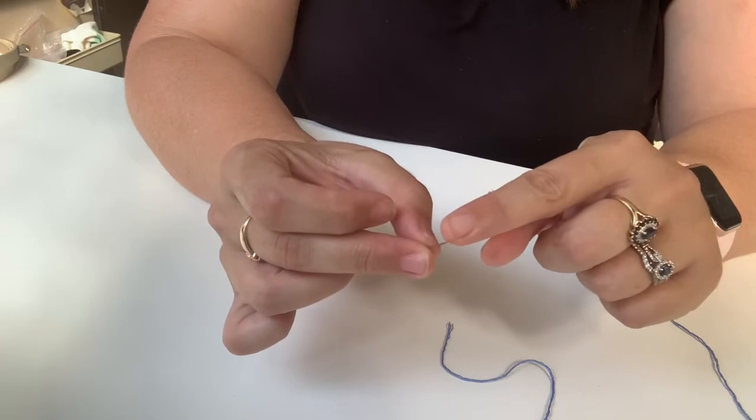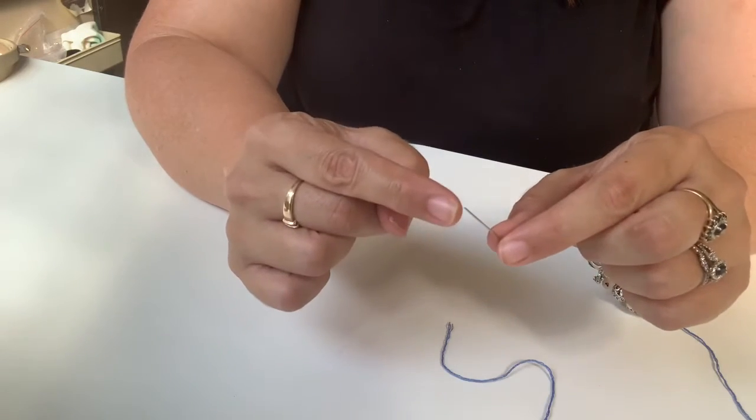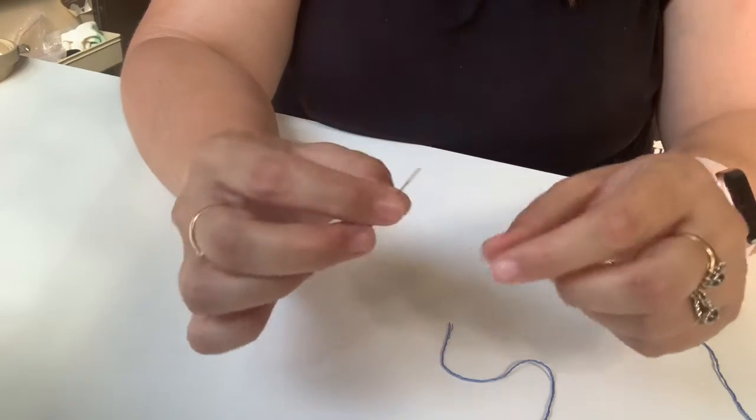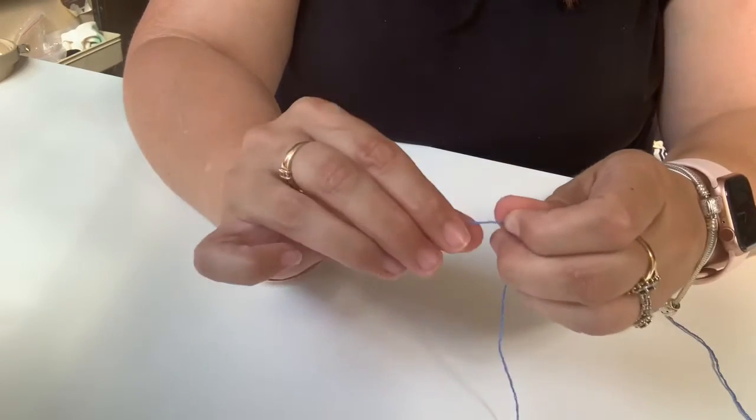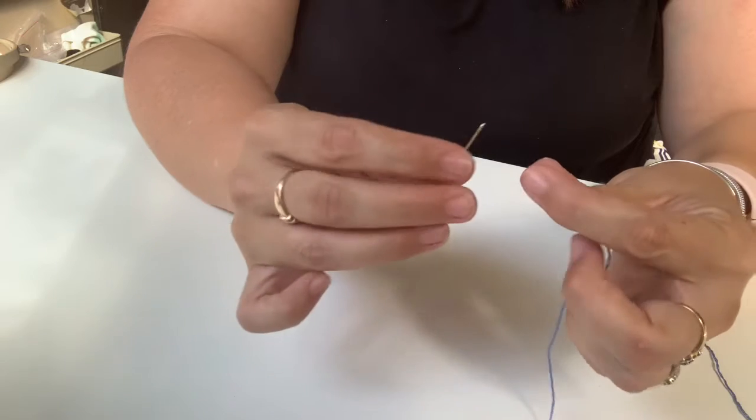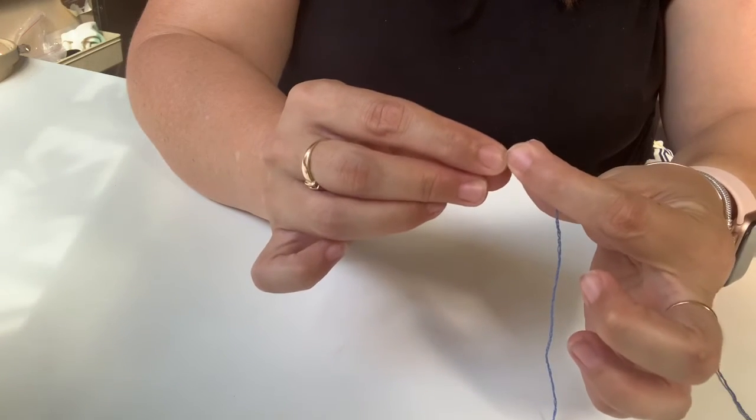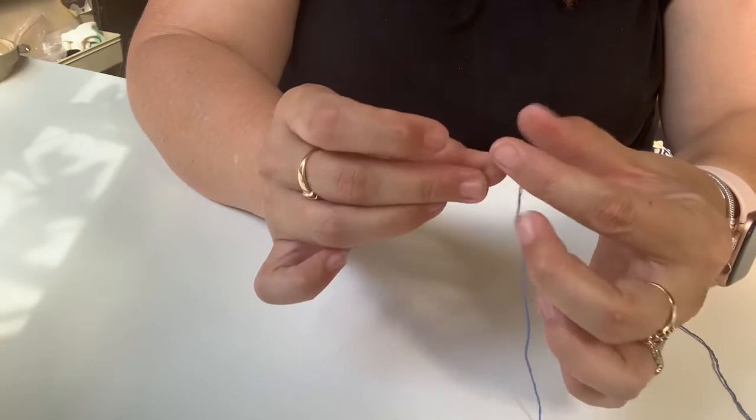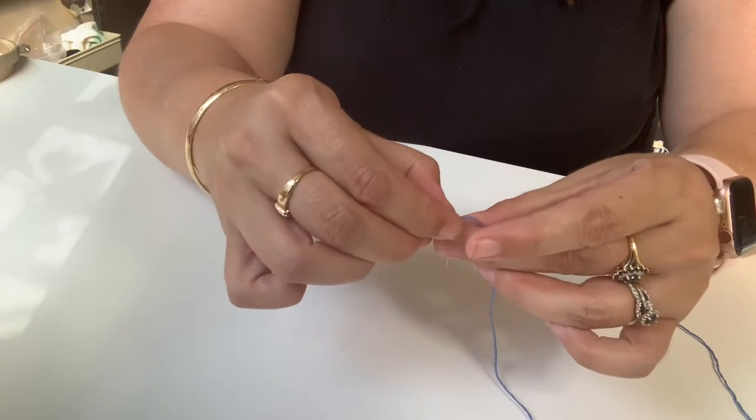So here's my needle. It's got the eye of the needle where our thread gets threaded through and our sharp point here. First thing we need to do is thread our needle. Get your thread and you're going to slide it through the needle and pull the threads through.